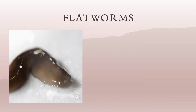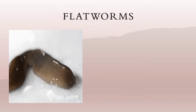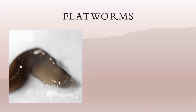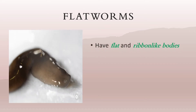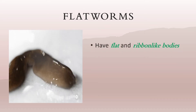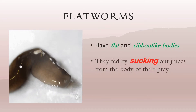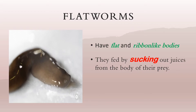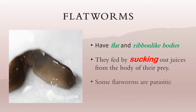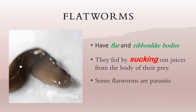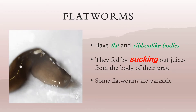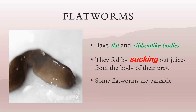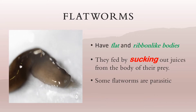Flatworms are called such because of their flat and ribbon-like bodies. They feed by sucking out juices from the body of their prey. Some flatworms such as tapeworms and flukes are parasitic.